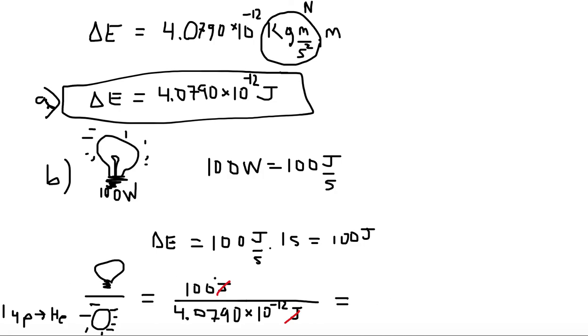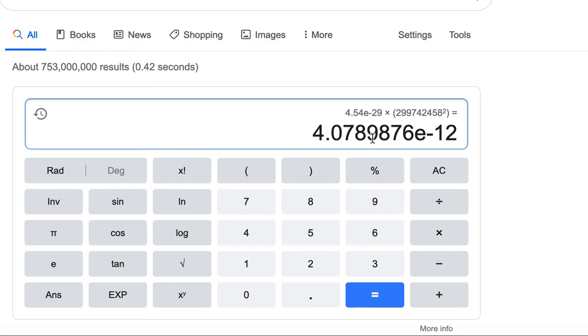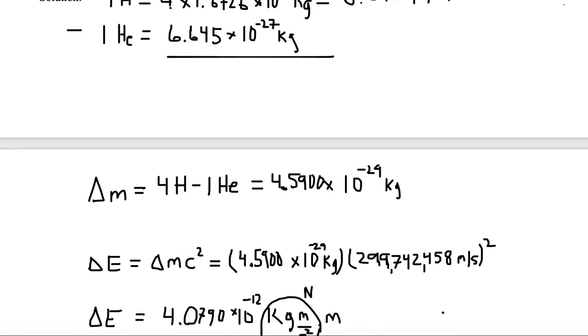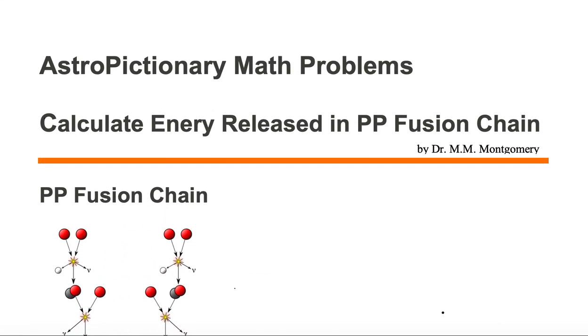And this is going to equal, and now we need to divide 100 by this 4.079 times 10 to the minus 12. Well, we already have this 4.079 times 10 to the minus 12, so let's divide it by 100. We're doing the inverse problem. Now that I've got my answer, I'm going to hit x to the minus 1, and it'll give me the correct answer of 2.45 times 10 to the 13th. So the one light bulb is emitting 10 to the 13th times more energy than converting four hydrogen atoms into one helium atom.